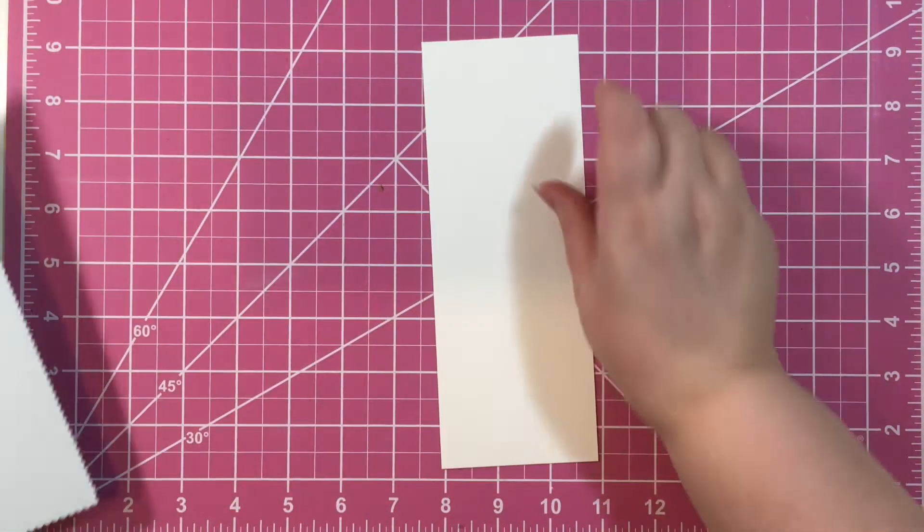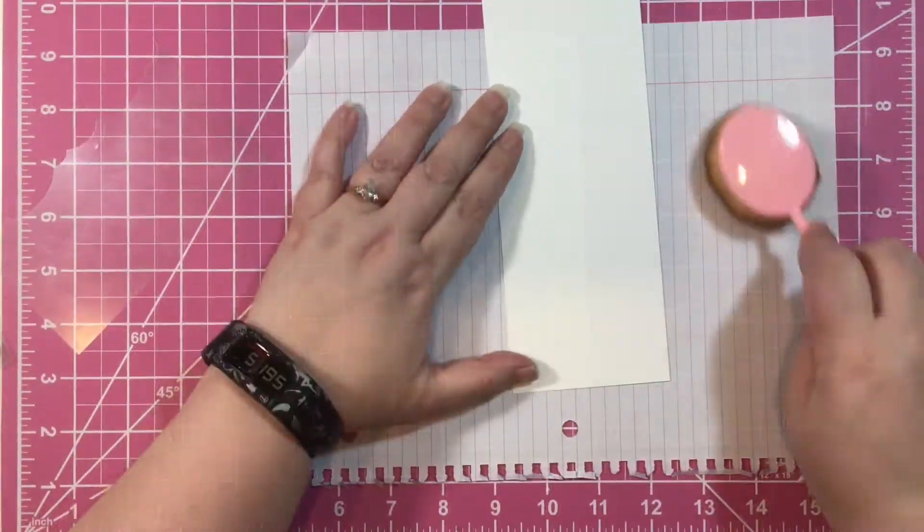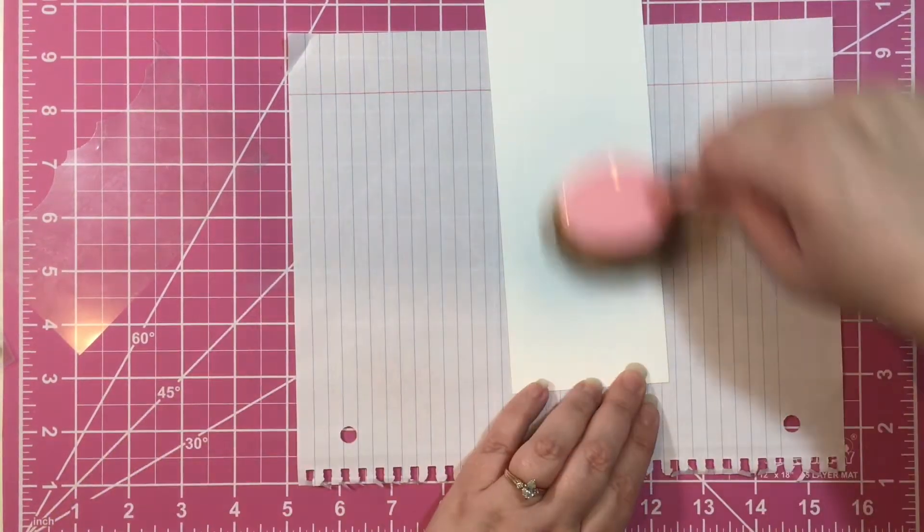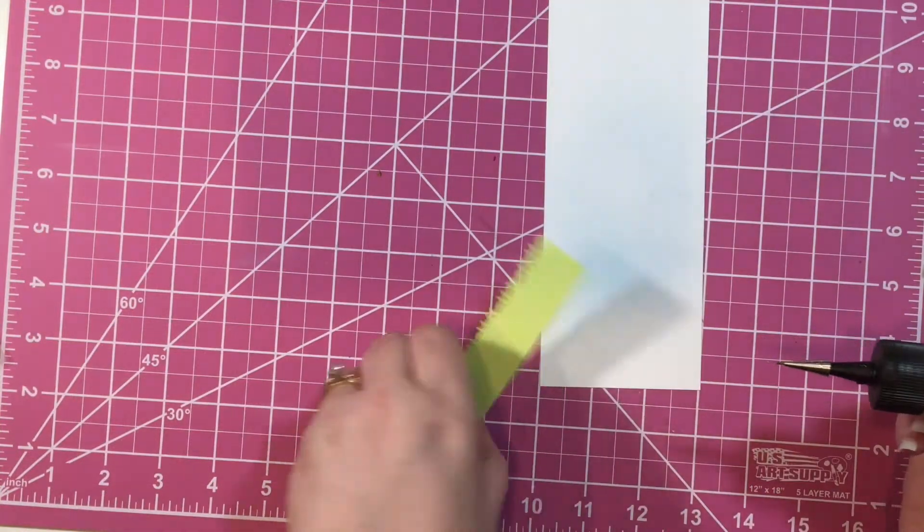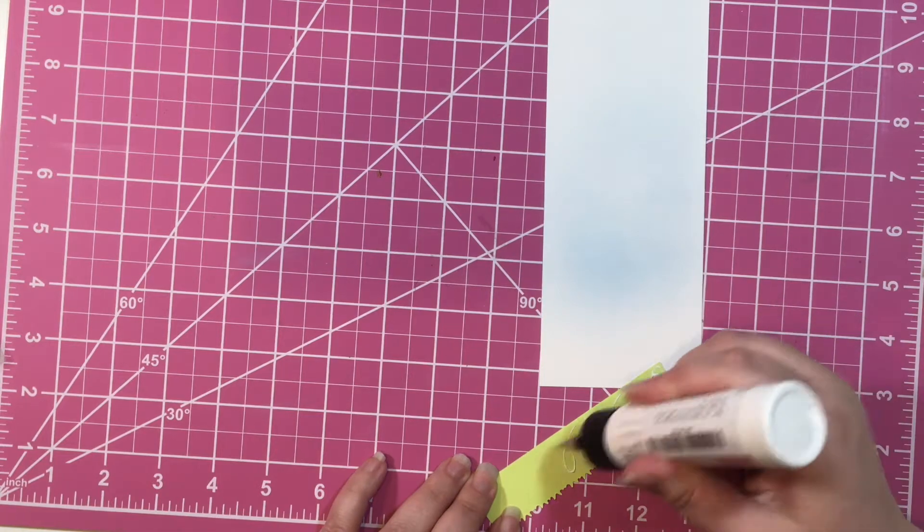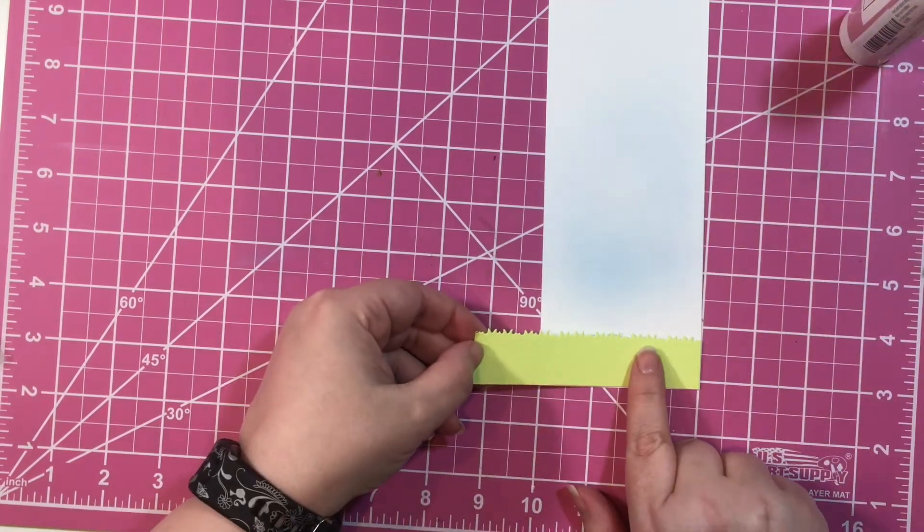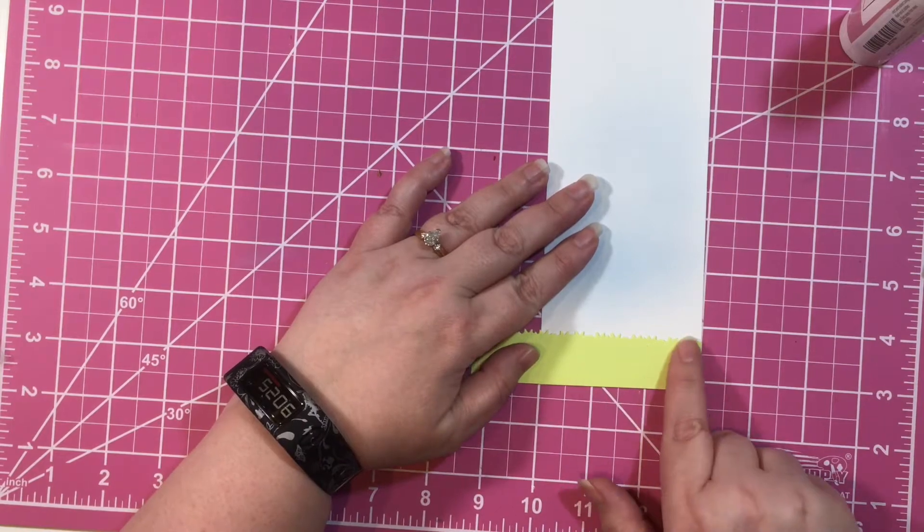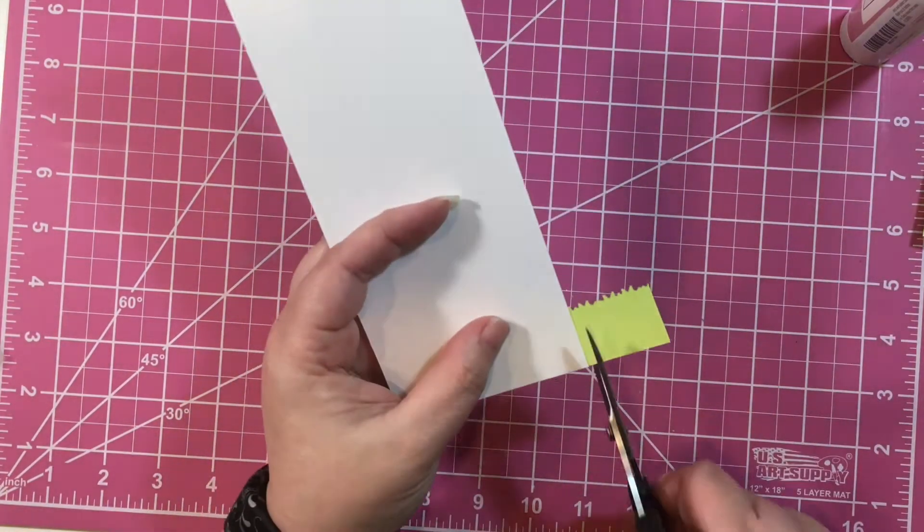I start out by cutting a scalloped slimline die and then I cut a white piece of paper that fits just inside of it. I took some oxide ink and added some clouds to the paper.